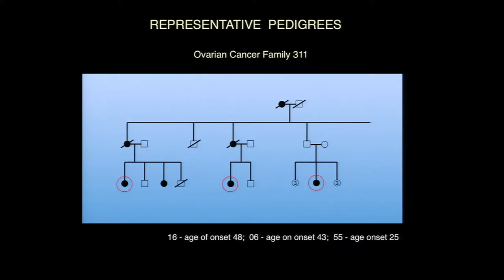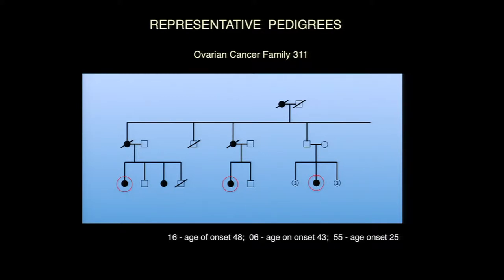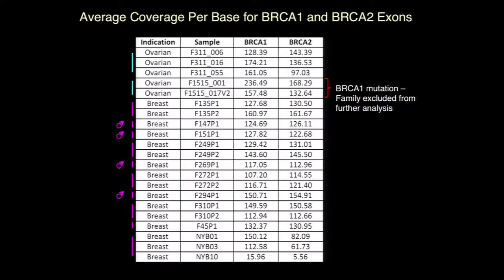These affected individuals all have parents or grandparents who were affected and they are clearly all related. Here's a breast cancer family with a number of individuals who were actually screened by Myriad as being BRCA negative. Here is the average coverage per base for BRCA1 and 2, because the idea we started with is that we should be looking for families that are BRCA1/2 wild type to look for other susceptibility genes. Indeed, one of our families which had been screened as negative actually turned out to be positive — these are families with males in them.